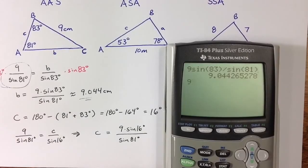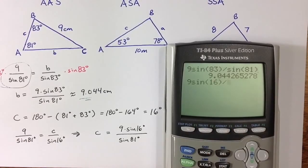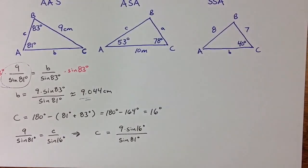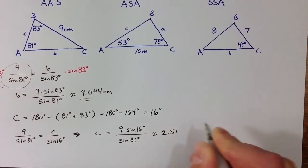So turning to our calculator again to help us figure out what that value should be, I can enter 9 times sine of 16, closing the parenthesis, and then dividing by sine of 81. We see that the value for c should be approximately 2.512 centimeters.